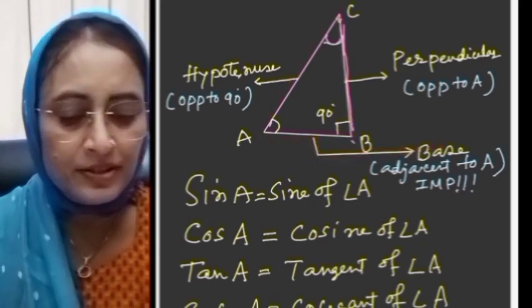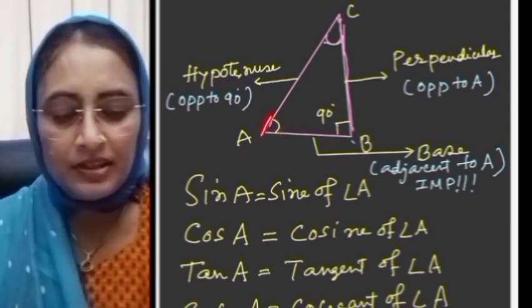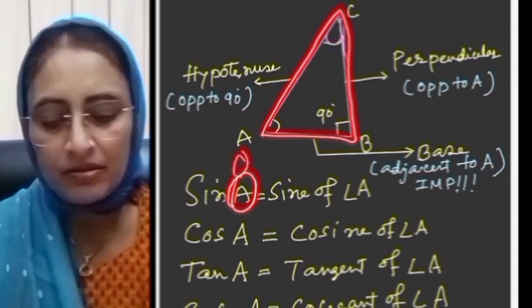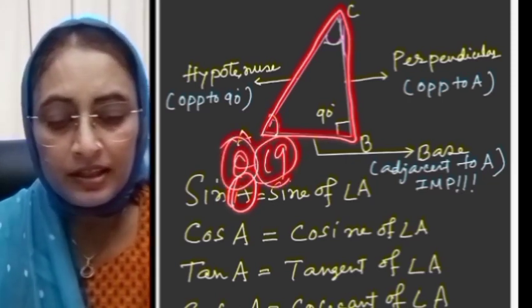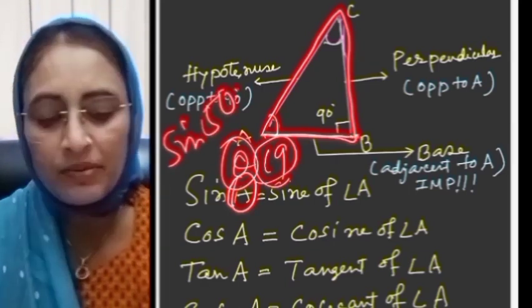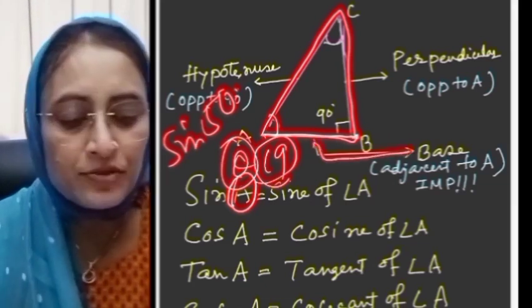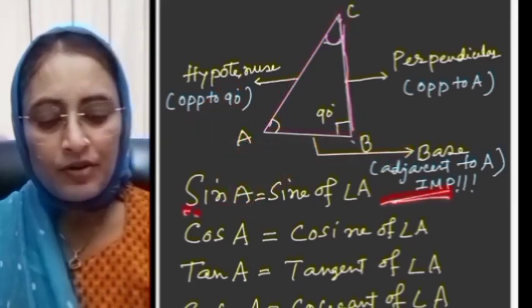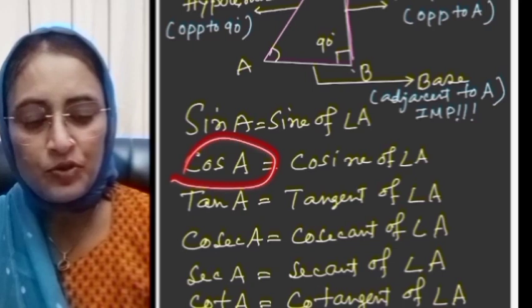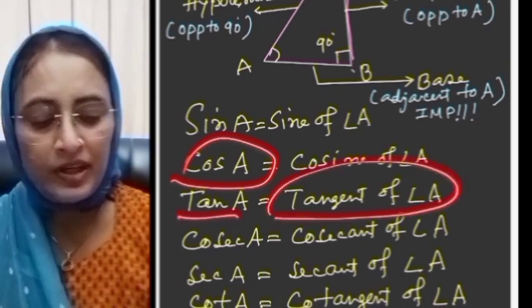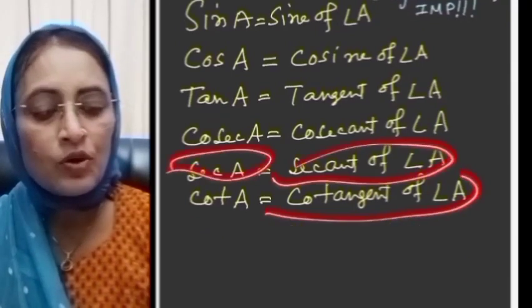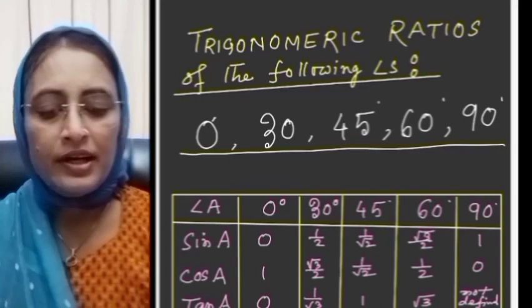Adjacent to base — if this is the acute angle theta, the trigonometric ratios are defined with respect to angle theta. Sin means sine of angle A, cos means cosine of angle A, tan means tangent of angle A, cosec means cosecant of angle A, sec means secant of angle A, and cot means cotangent of angle A. These are the abbreviations used.